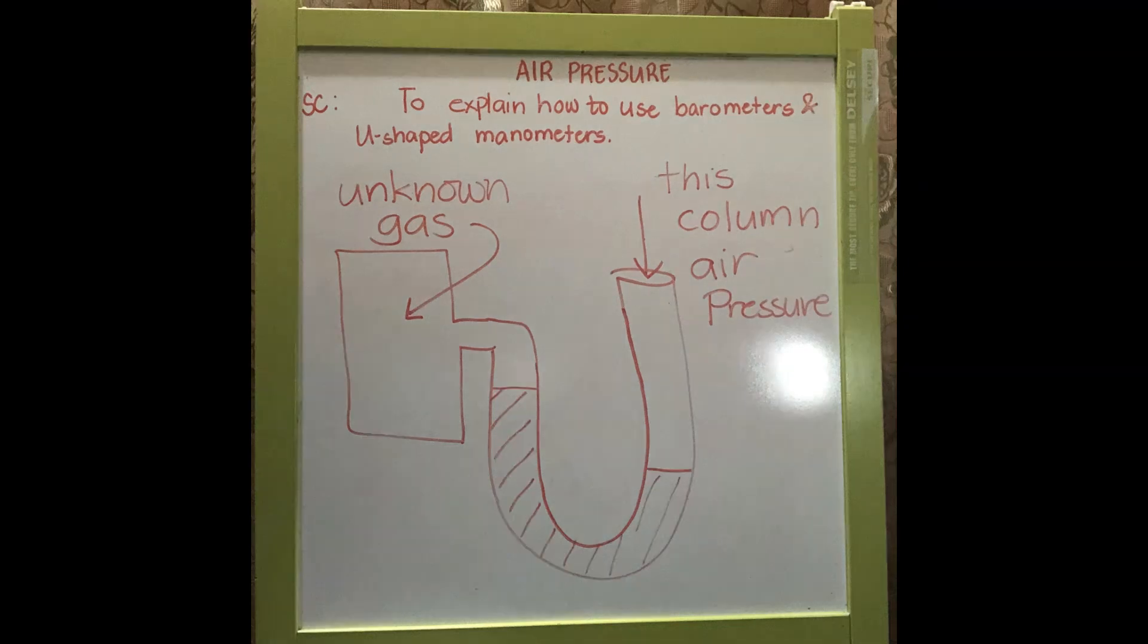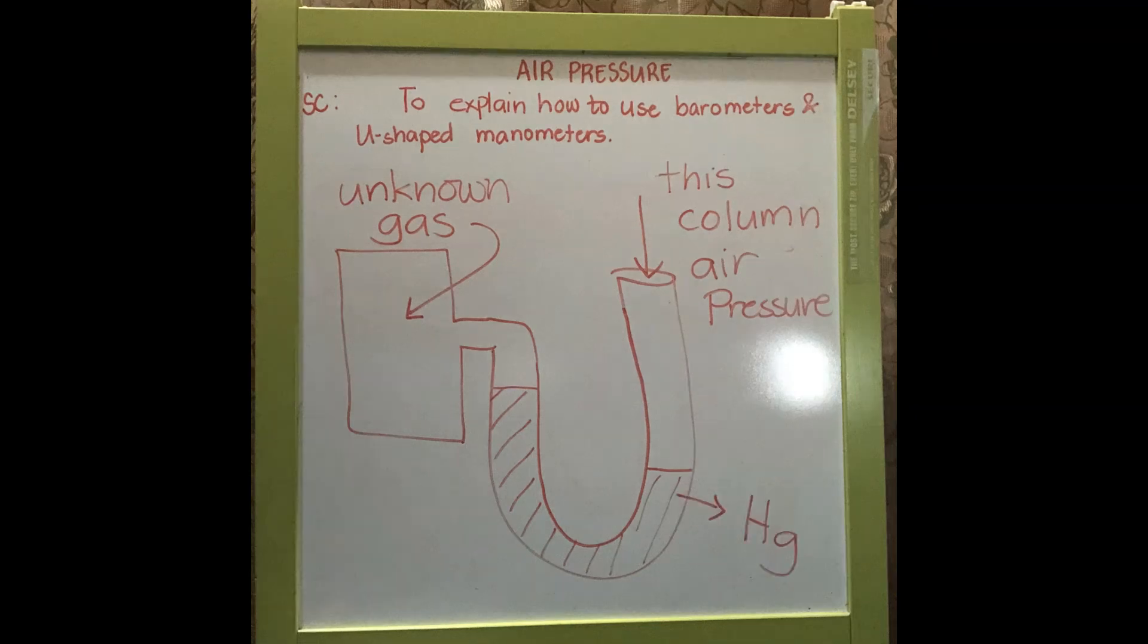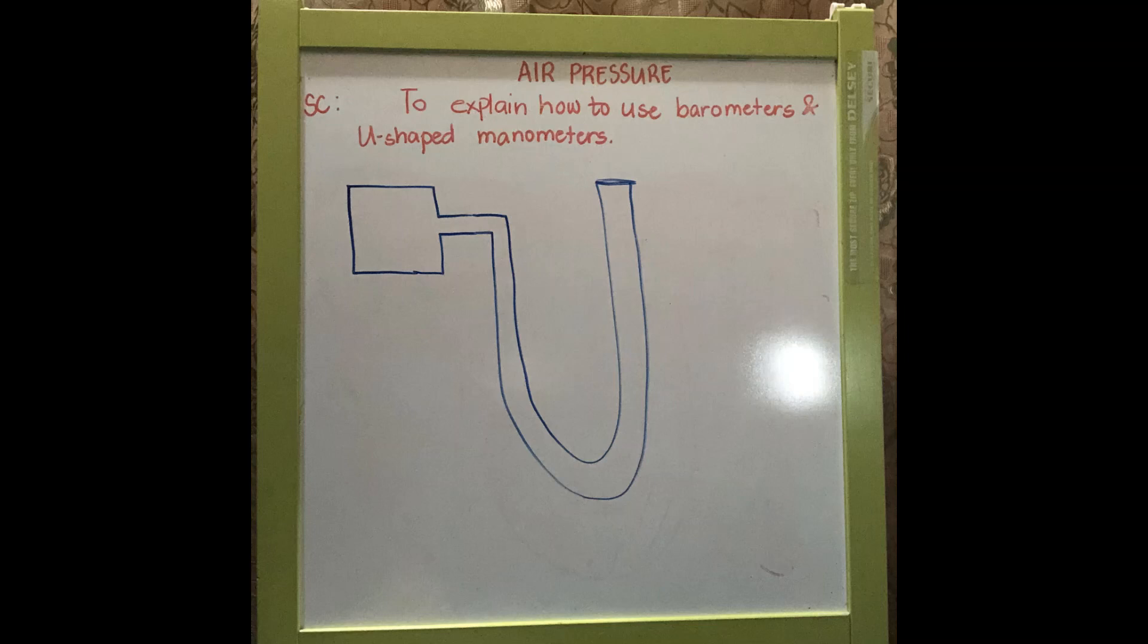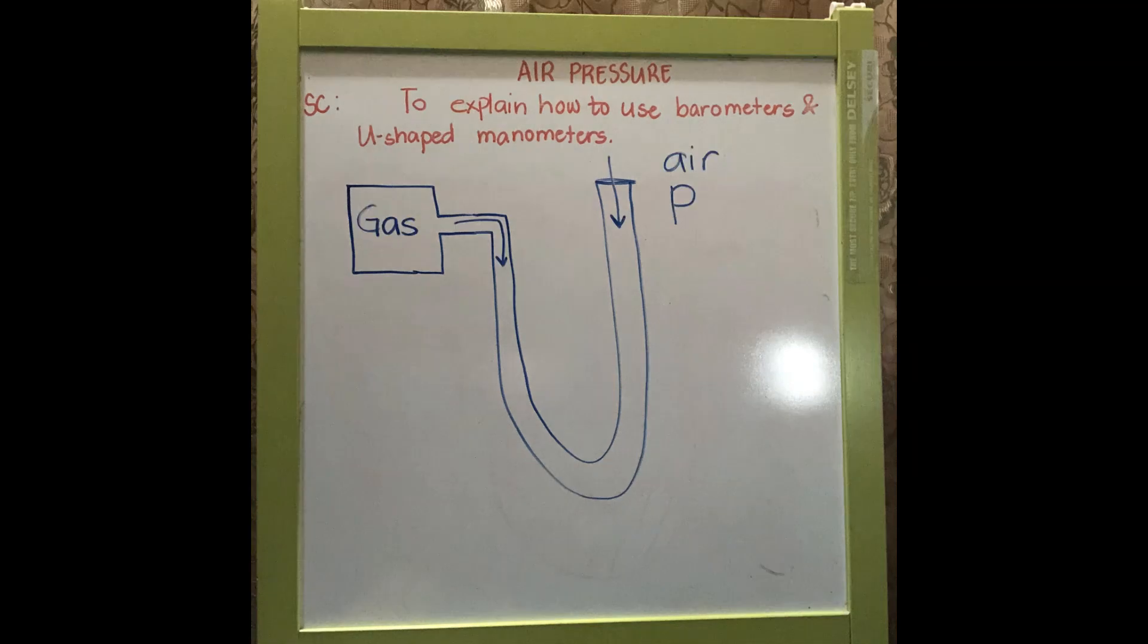The tube of the manometer is filled either with water, alcohol, or just mercury. The pressure of the trapped gas and the air pressure are both pushing down the tubes at the same time.